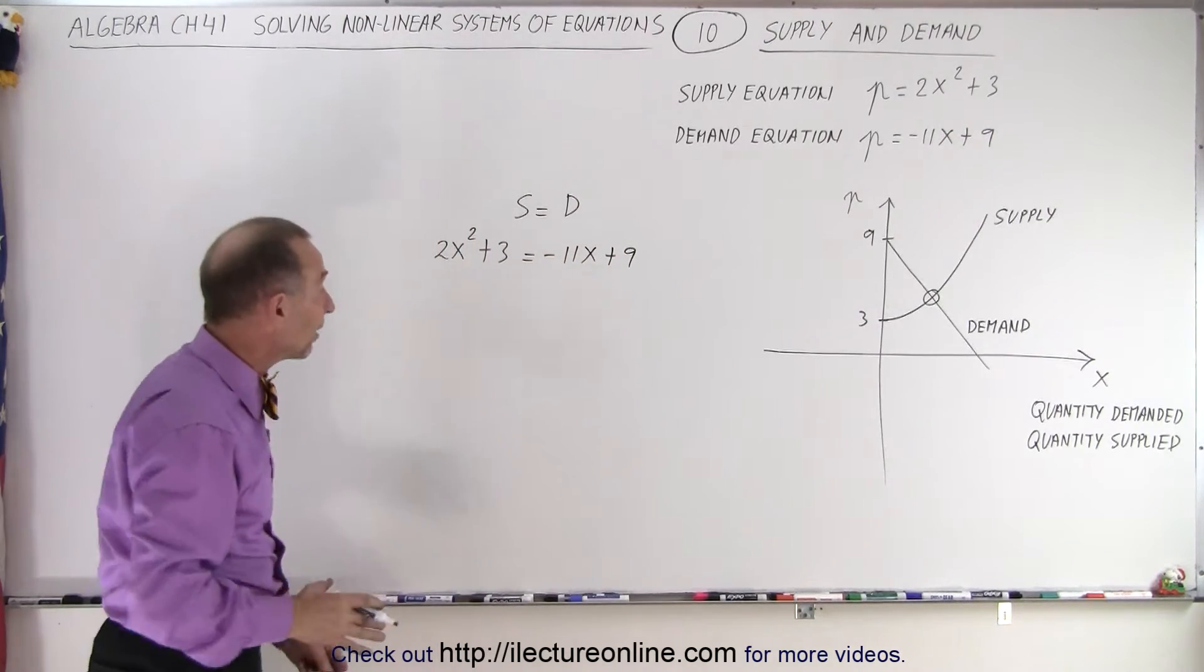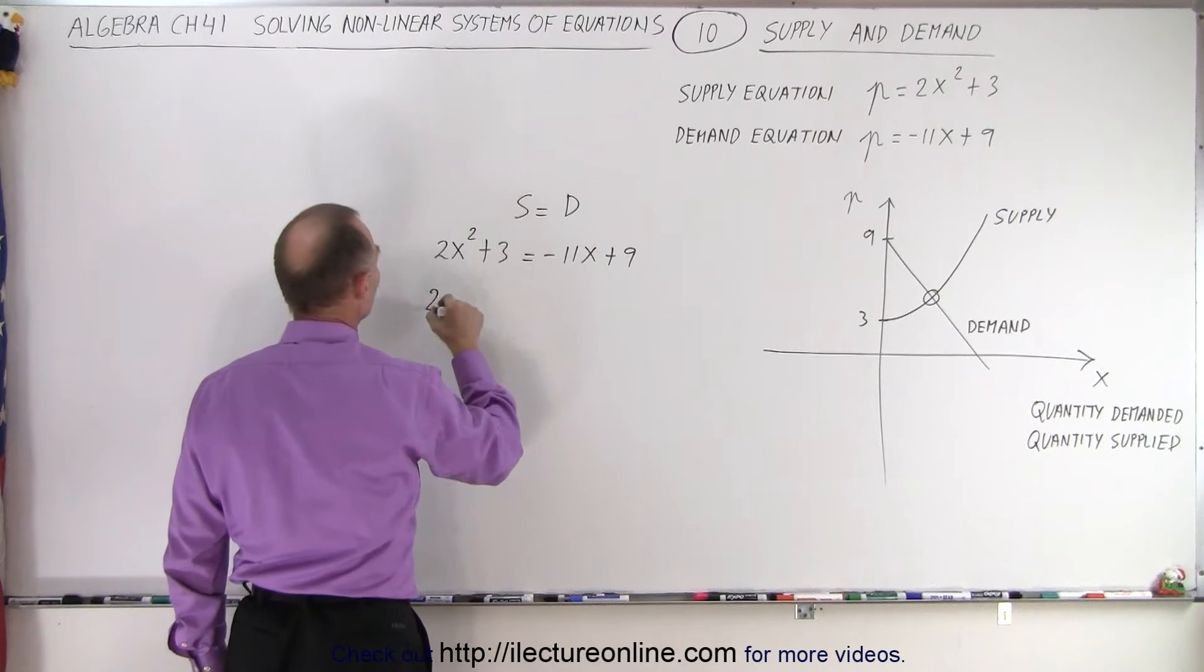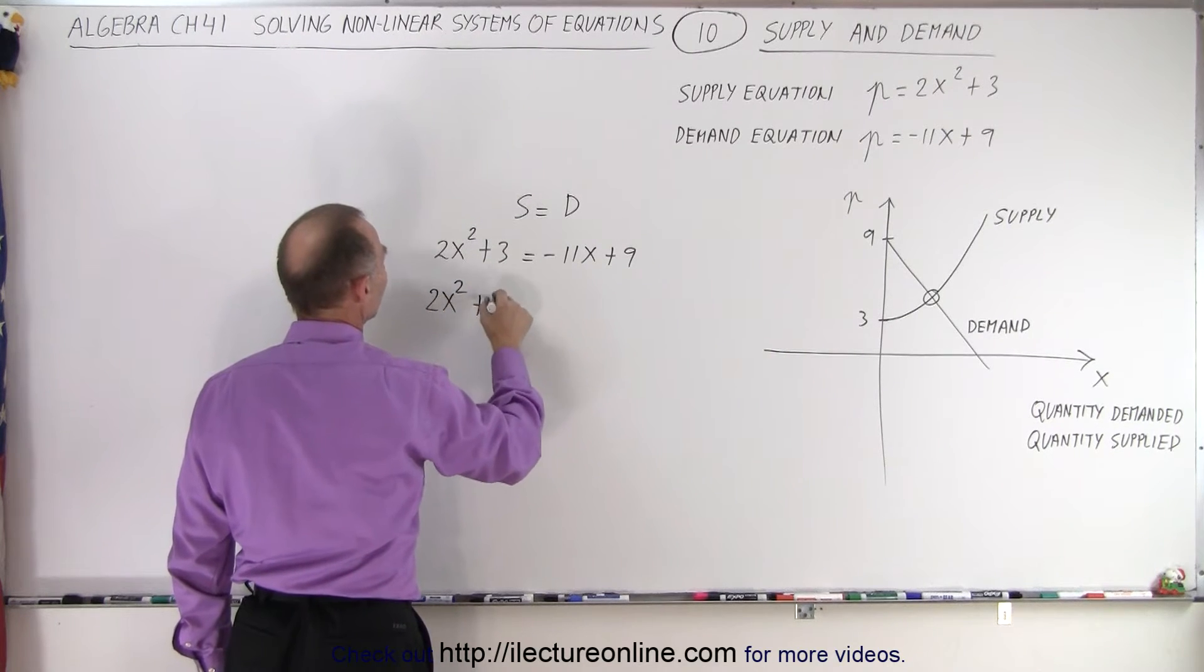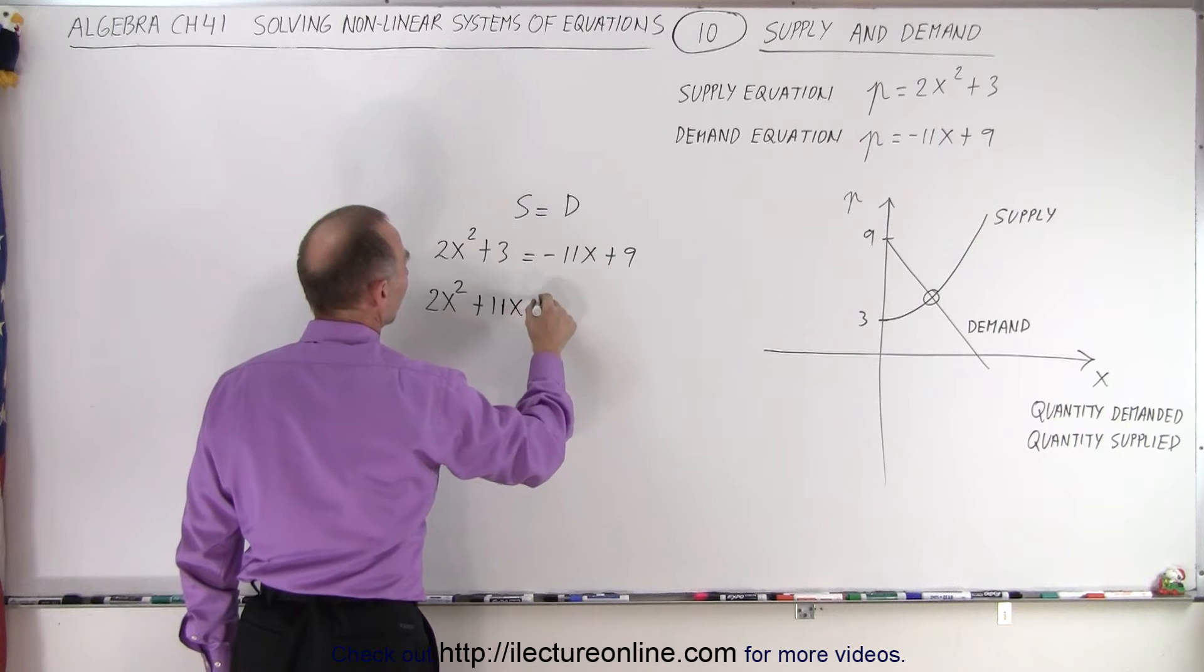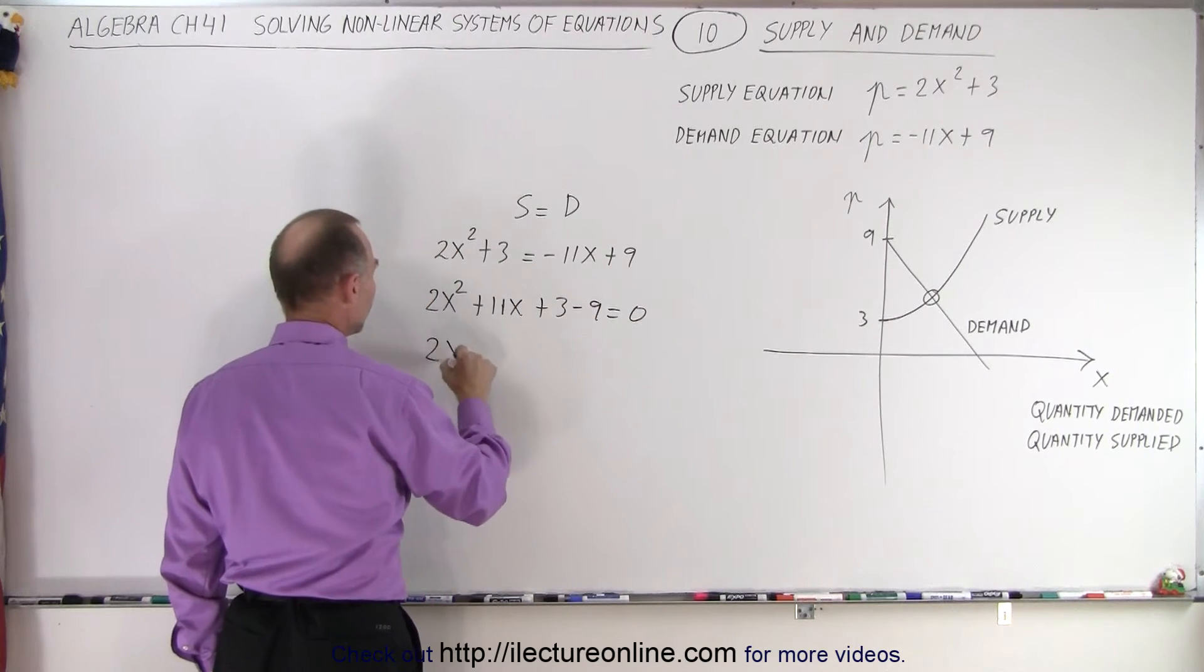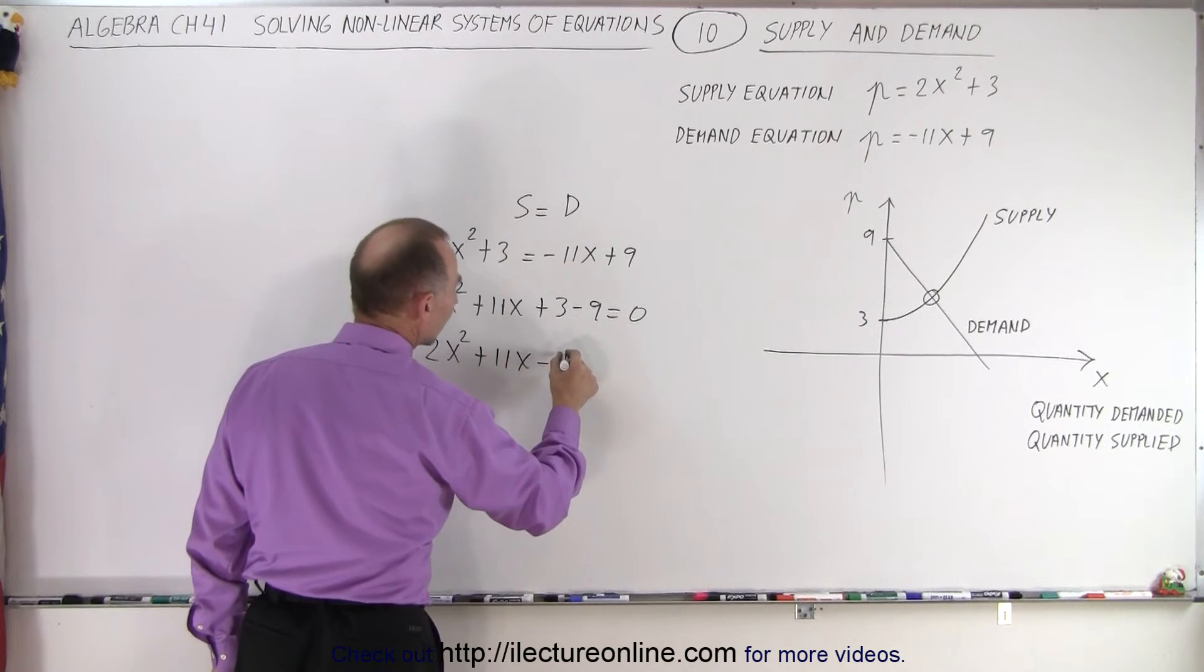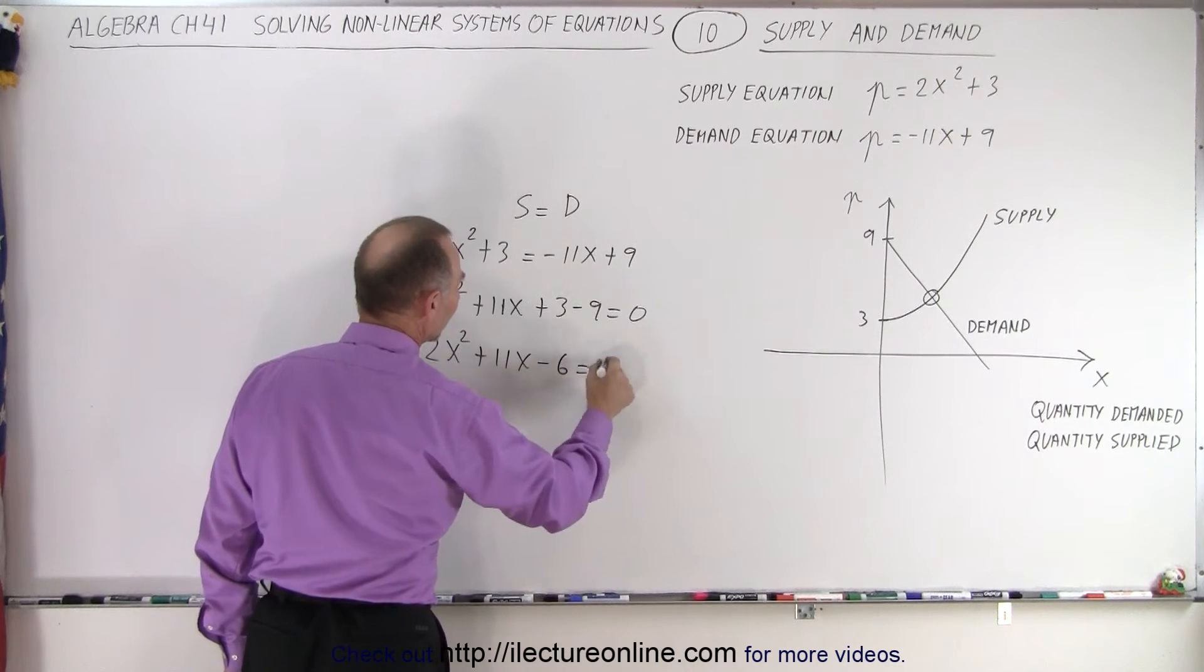And so that means that this simply turns into a quadratic equation. We can move everything over to one side. We can have 2X squared plus 11X plus 3 minus 9 equals 0. Or 2X squared plus 11X minus 6 equals 0.